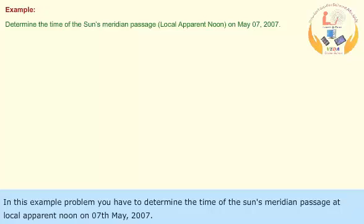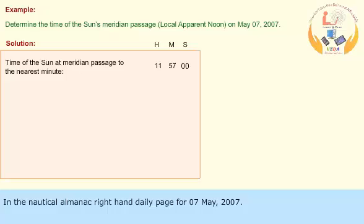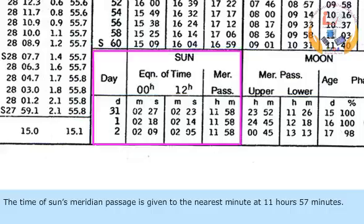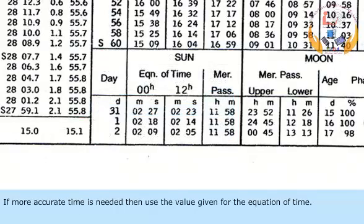In this example problem, you have to determine the time of the sun's meridian passage at local apparent noon on 7th May 2007. This problem can be solved in two ways, depending on the accuracy required. In the nautical almanac's right-hand daily page for 7th May 2007, the time of sun's meridian passage is given to the nearest minute at 11 hours 57 minutes. If more accurate time is needed, then use the value given for the equation of time.